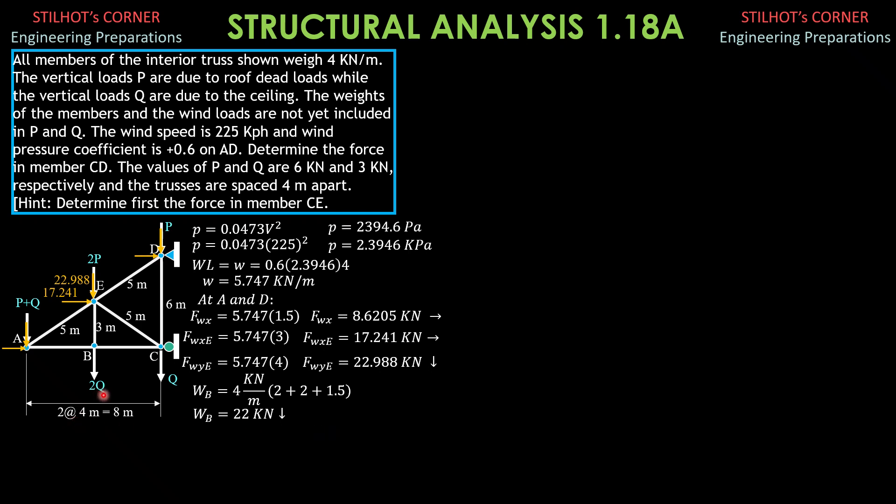Then we add that to 2 cubed later. Then the vertical for gravity load at E due to the weight of members, we have AE 2.5, half of length, DE 2.5 also, CE 2.5, and BE, half of 3, 1.5.